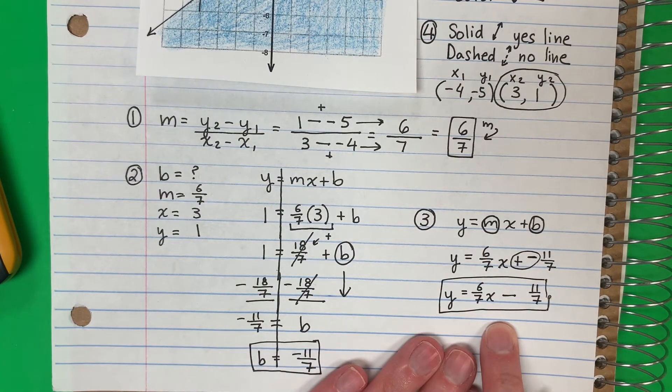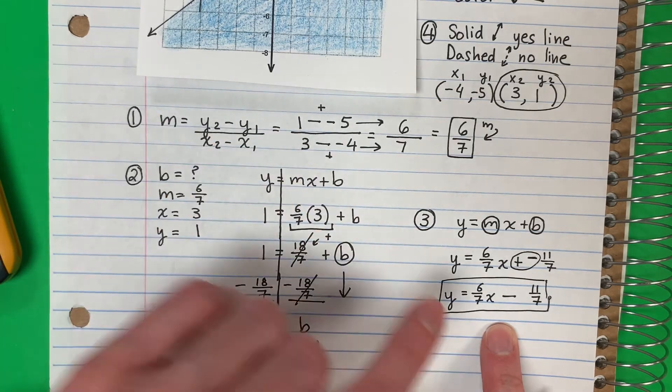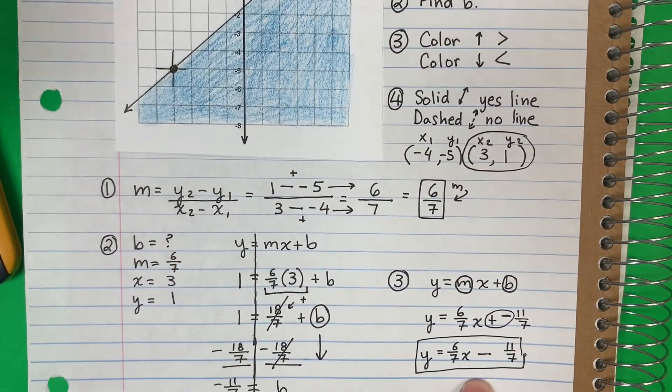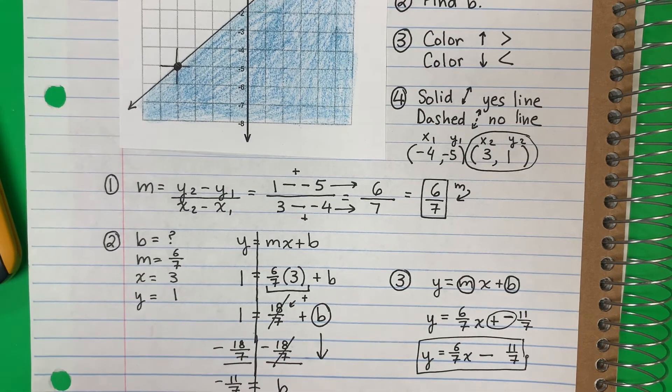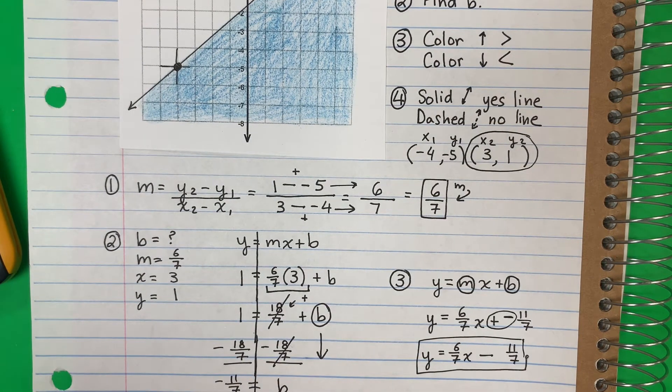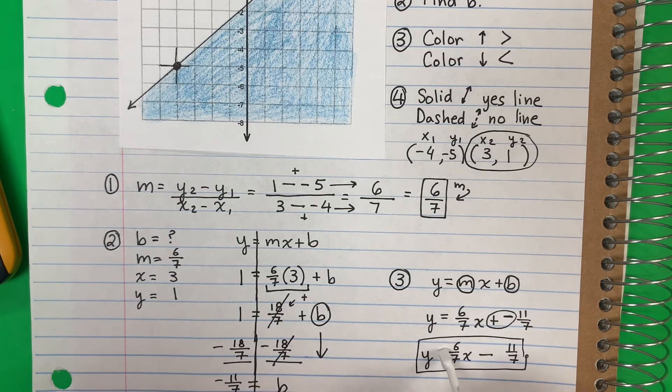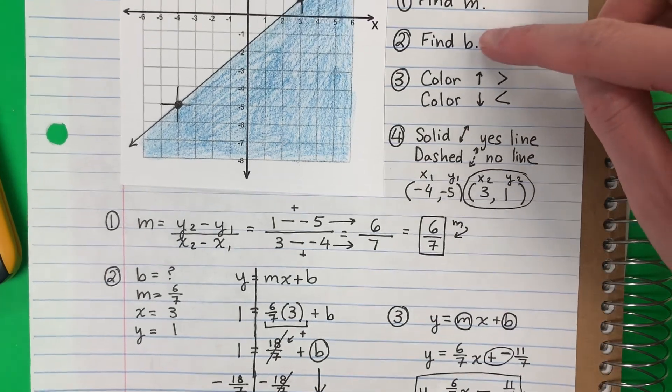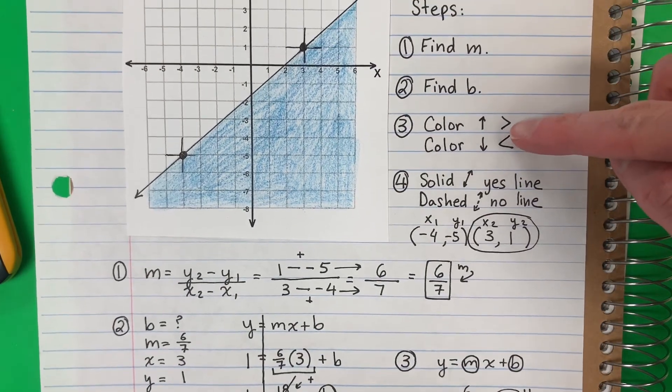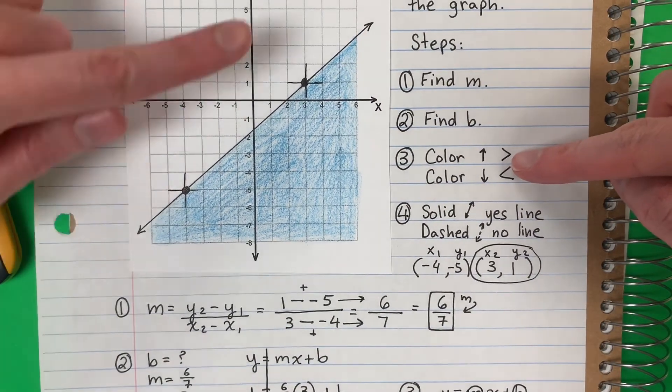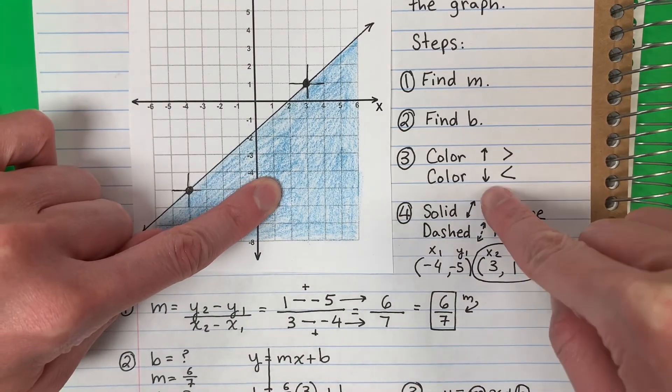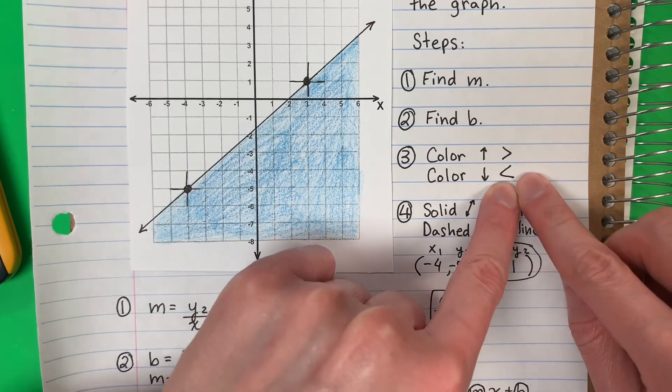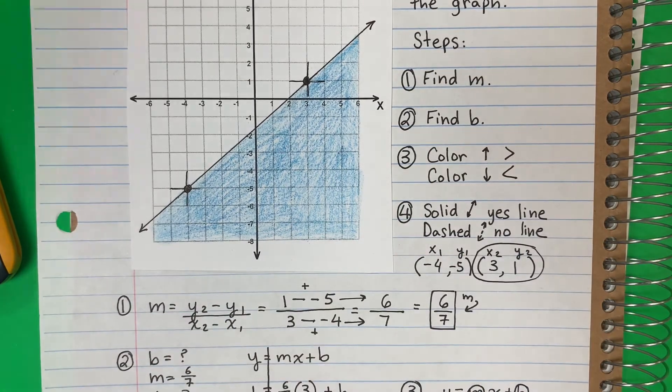Now I forgot that I need to put the sign. Let me erase the equal. I cannot use the equal here, no puedo usar el igual aquí, because it's an inequality. So I found m, I found b. Let's see, where's the color? Donde está el color? Up or down? The color is down, el color está abajo, so I will be using the less. I'm going to use less because it's down.